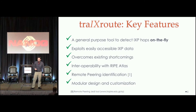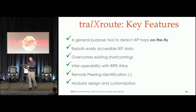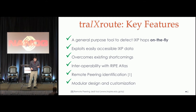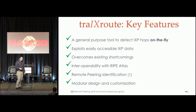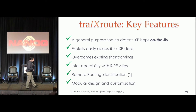What are the key features of TraceRoute? It is a general-purpose tool in which we can detect crossing links on the fly. This means that we don't need a bunch of Traceroute paths in order to infer with high confidence IXP crossing links — with only one Traceroute path we could have this result. This also allows us to have fast IXP detection. We focused only on easily accessible IXP data, and this is something that allowed us to overcome some existing shortcomings.